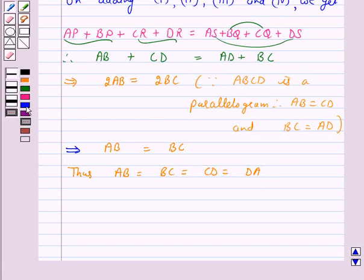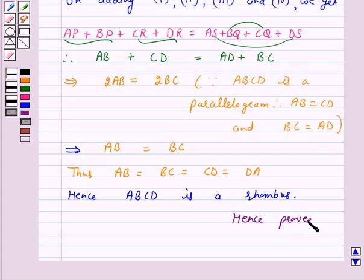Hence ABCD is a rhombus. Hence, we have proved the parallelogram circumscribing a circle is a rhombus. I hope the solution is clear to you. Bye and take care.